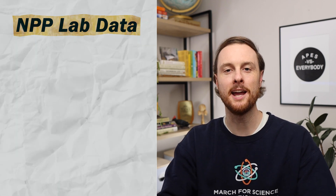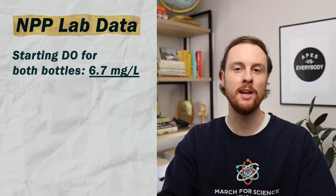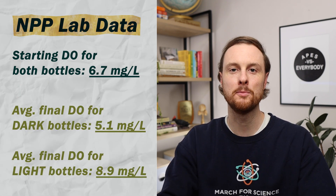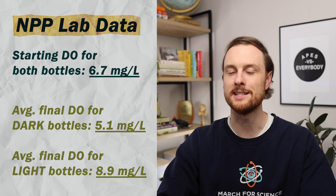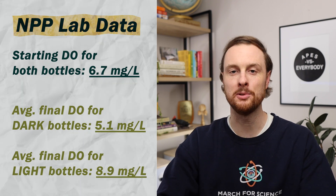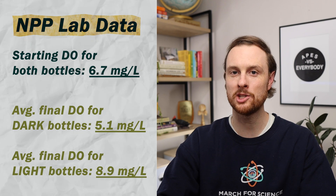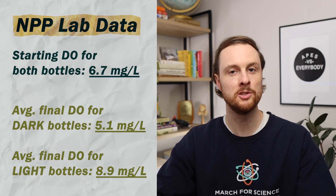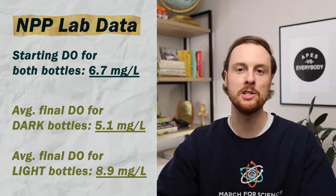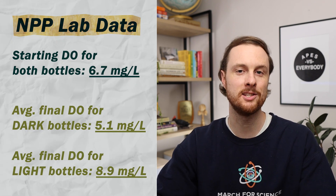Now that we've established a hypothesis and gone over our variables, groups, and constants, as well as waited two days for our guppy grass to get its NPP on, let's get down to practicing some calculations. If your class wasn't able to run this experiment, or you got data that didn't make any sense, I have the starting dissolved oxygen level for the creek water my students used, as well as an average of their final dissolved oxygen levels for both the light and dark bottles. I'm going to go through how to set up calculations for NPP, GPP, and respiration loss using these dissolved oxygen data.